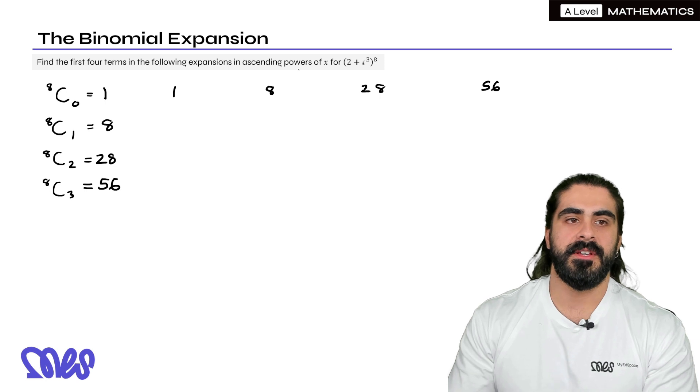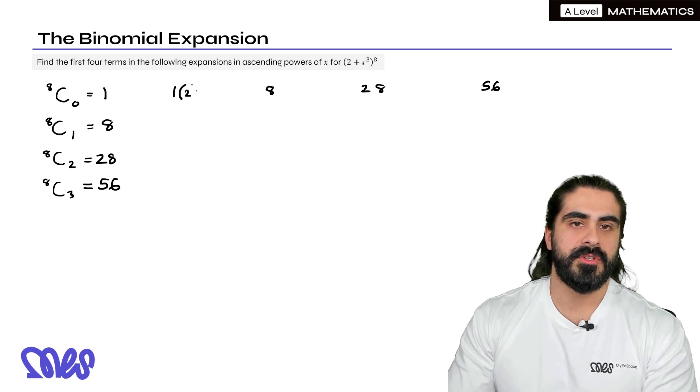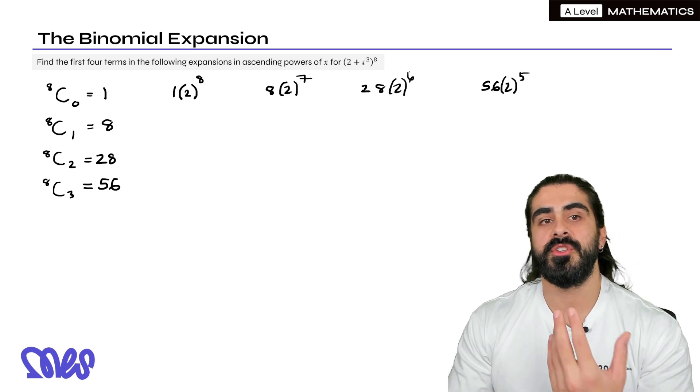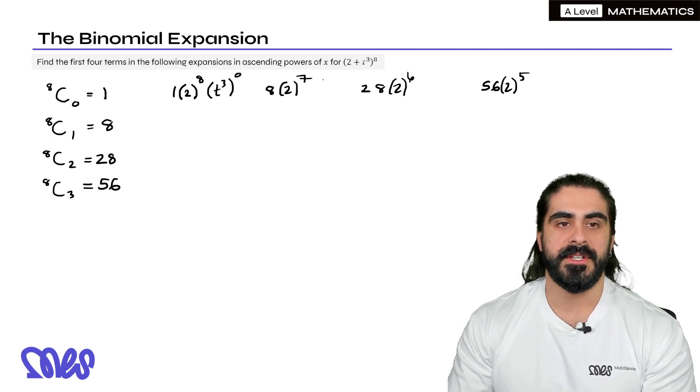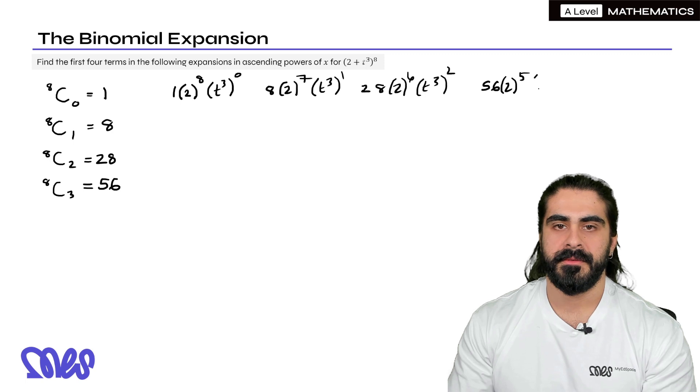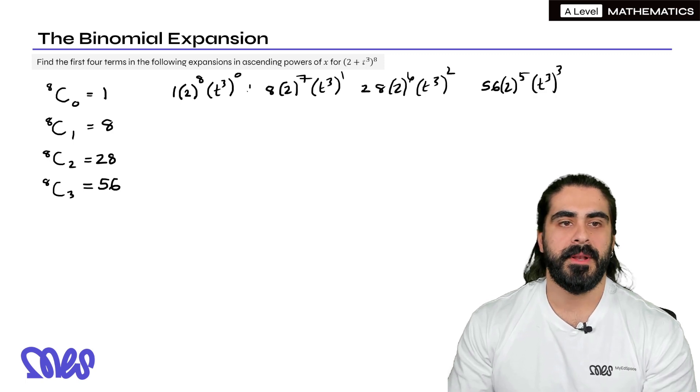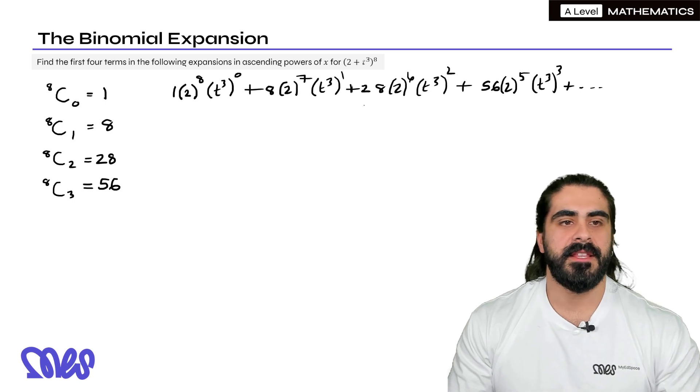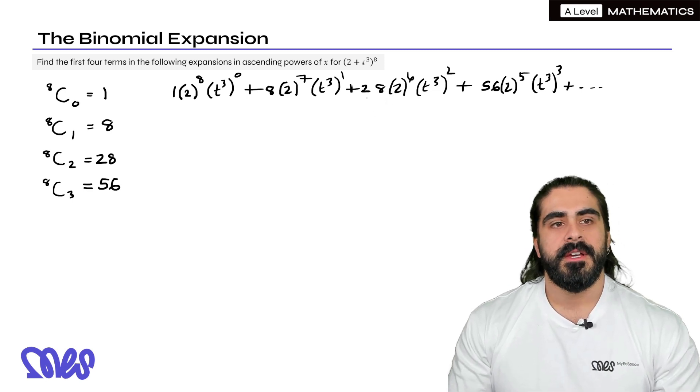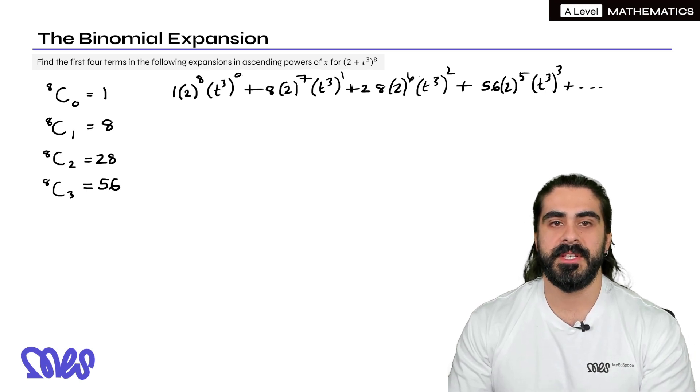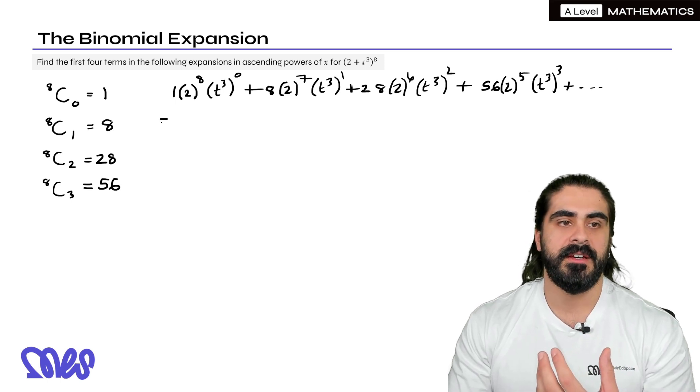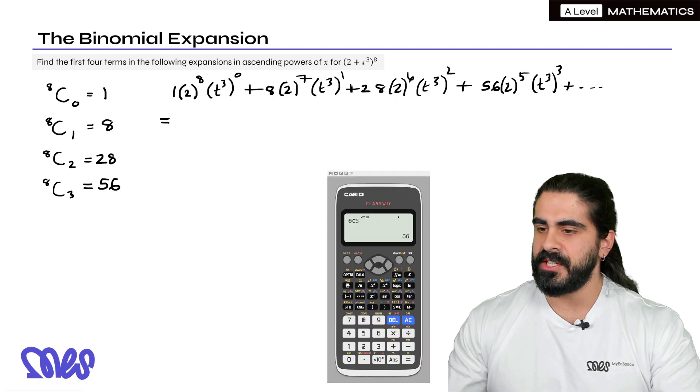Then remember the first term is going to go down in power, so it's going to go two to the power of eight, two to the power of seven, and then it just keeps going, but it's not interested, it only wants the first four terms, right? Then the t cubed will start from zero and it will work its way up. Power one, power two, power three, and we put pluses in the middle. And you can put plus dot dot just to indicate that it's going to keep going, but we're not interested in those. Remember the trick I told you to look out for, the powers need to add to eight. Eight plus zero is eight, seven plus one is eight, six plus two is eight, five plus three is eight. This is just a double check so that you, to make sure that you don't make a mistake.